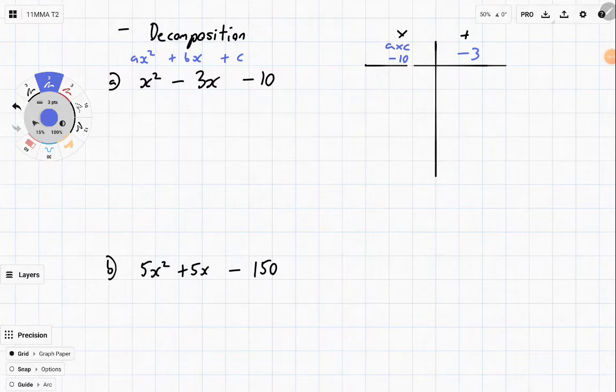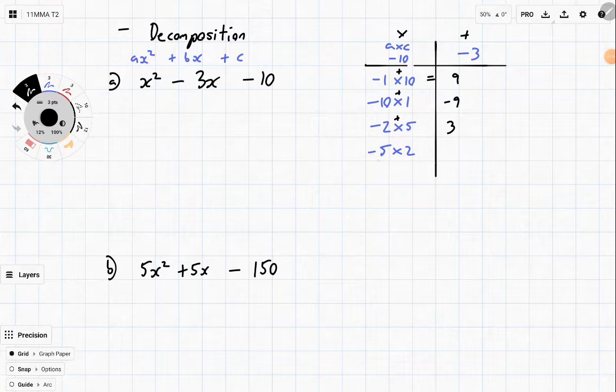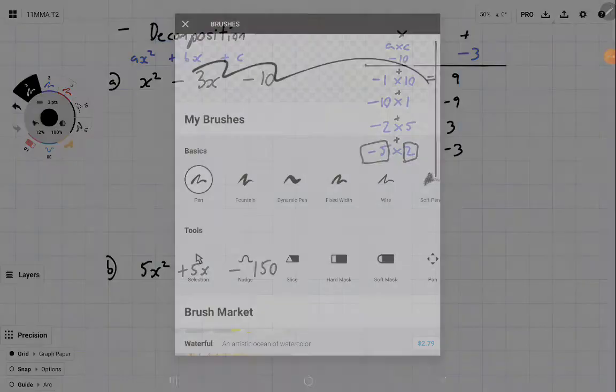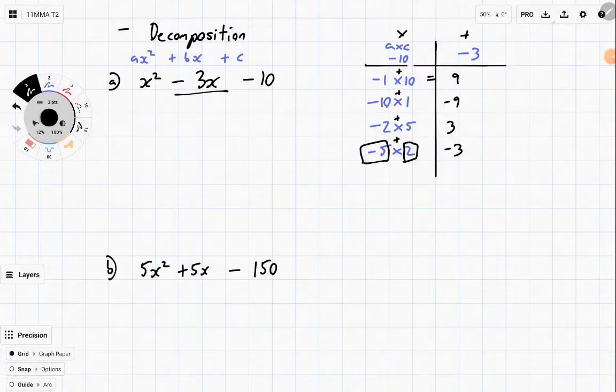So let's just take some of the obvious ones. Minus 1 times 10, minus 10 times 1, minus 2 times 5, and minus 5 times 2. And those are all of the factors of 10, and I just need to check them by adding them up. Minus 1 plus 10 is 9, negative 10 plus 1 is negative 9, negative 2 plus 5 is 3, and negative 5 plus 2 is negative 3. And so the two numbers we were looking for were negative 5 and 2.